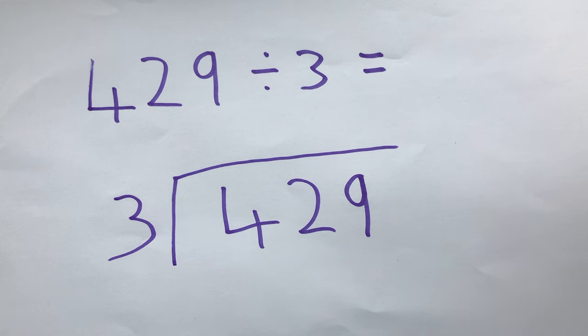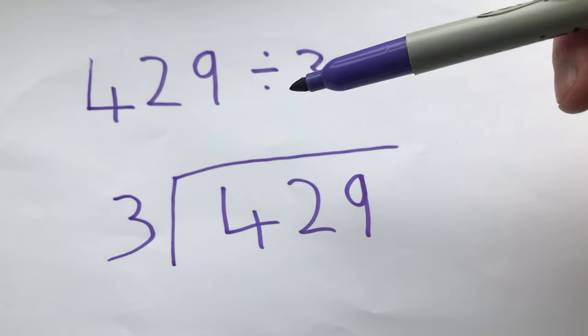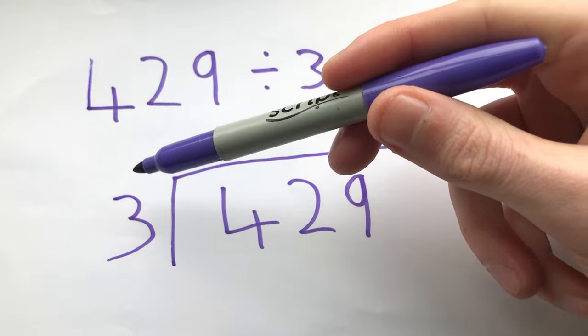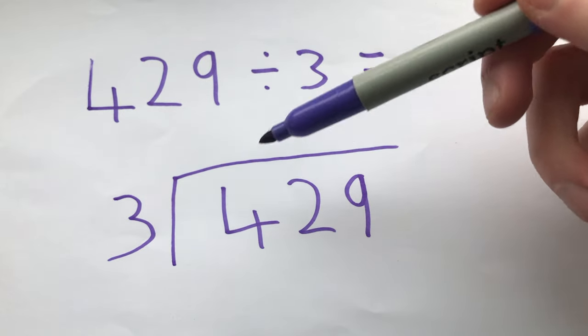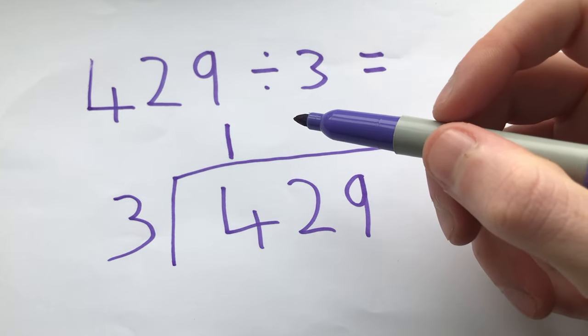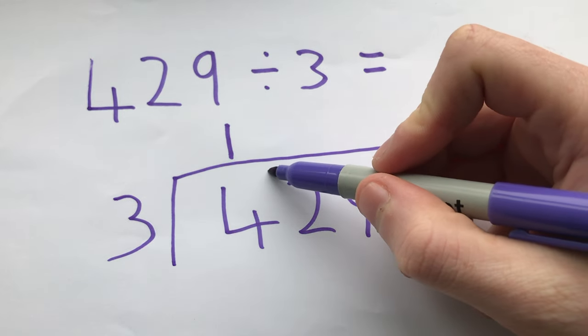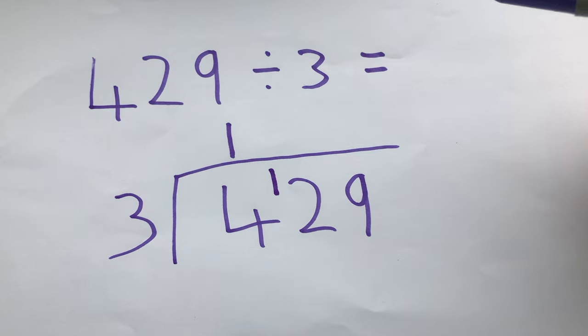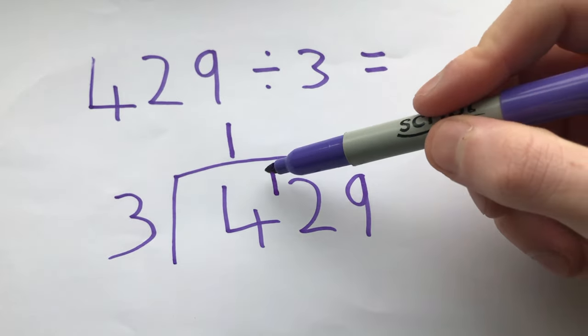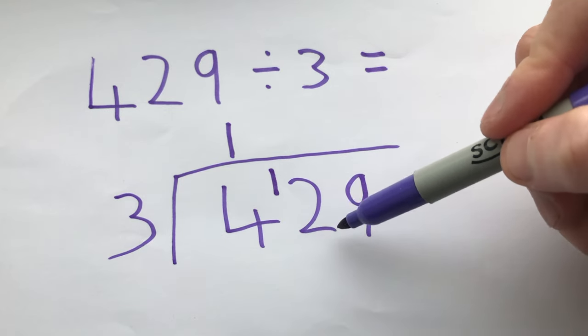Now all we do is we look at our number and go across to see how many times does this fit into these numbers. I know that three fits into four once so I put my number one there. I have one left over so I carry that one and place it there. The reason we do this is so we can then see how many threes go into this number that we just created which is 12.